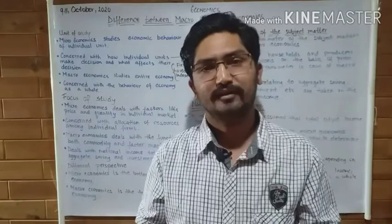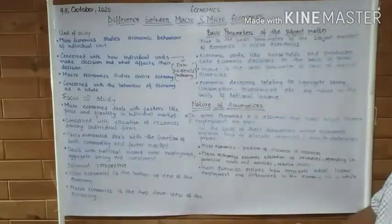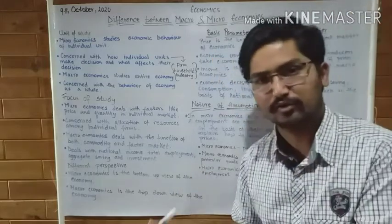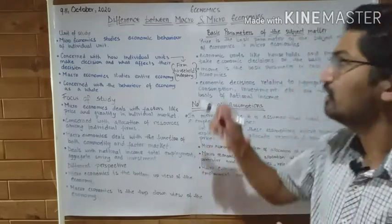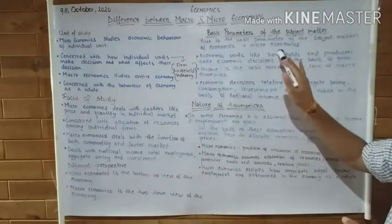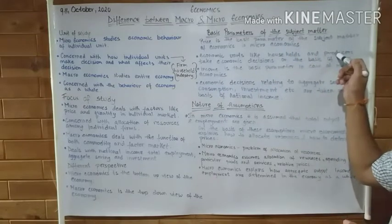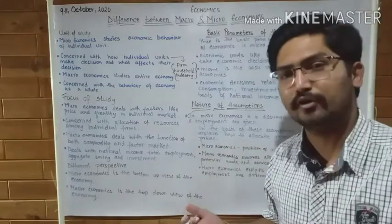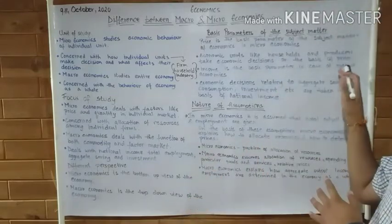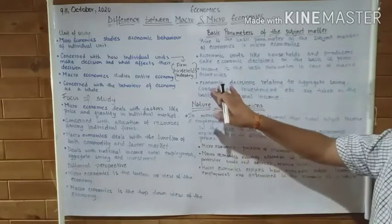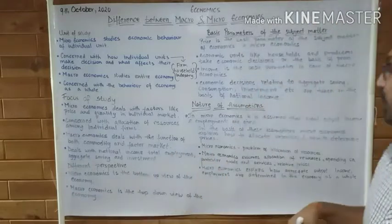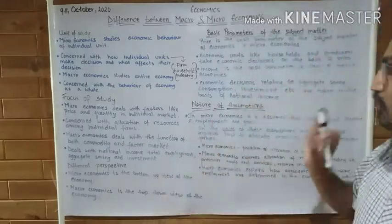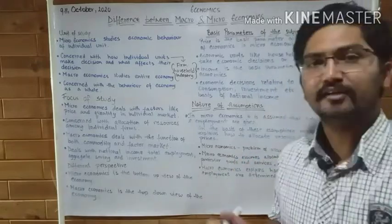Macro means big. To elaborate: price is the basic parameter of the subject matter in microeconomics. Economic units such as households and individual producers make economic decisions on the basis of price. In macroeconomics, the basic parameter is income — economic decisions relating to aggregate saving, aggregate consumption, aggregate demand, and aggregate supply are taken on the basis of national income.